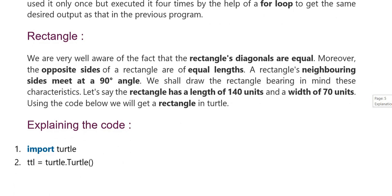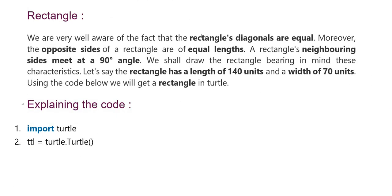Rectangle. We use the rectangle. Learn the rectangle. A rectangle's diagonals are equal. Opposite sides of the rectangle are equivalent. A rectangle's neighboring sides meet at a 90 degree angle. Draw the rectangle bearing in mind these characteristics. Rectangle has a length of 140 units and a width of 70 units.